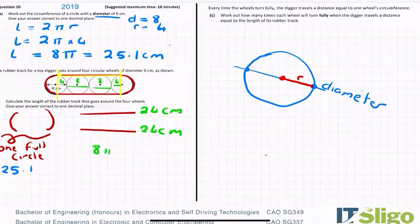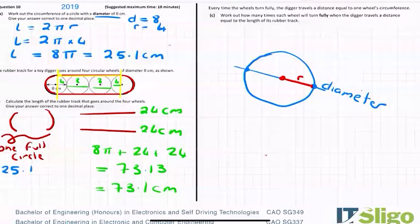So I have two half circles added together to give me 25, a 24 and a 24. So on our calculator, 8π plus 24 plus 24 equals. Just get that exact 73.13 or 73.1 centimeters. So that's how you get the length of a track. So, like I said, quite confusing the first time you see it.